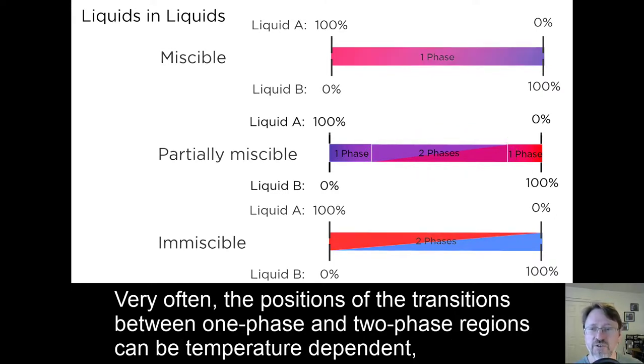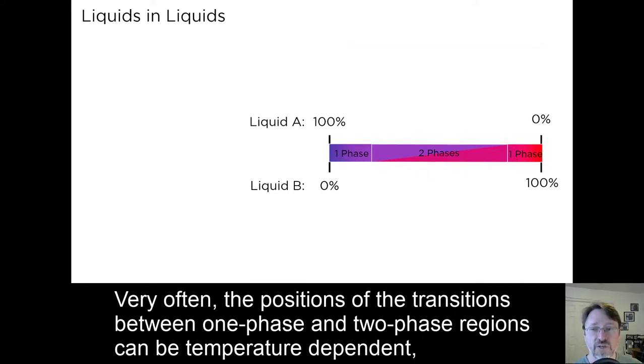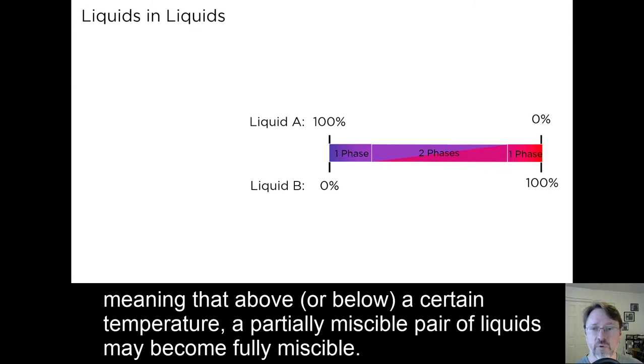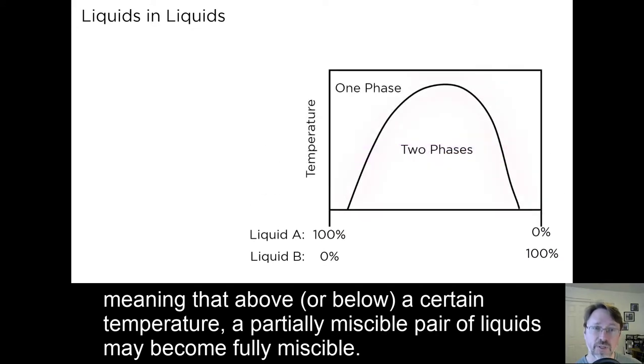Very often, the positions of the transitions between one phase and two phase regions can be temperature dependent, meaning that above or below a certain temperature, a partially miscible pair of liquids may become fully miscible.